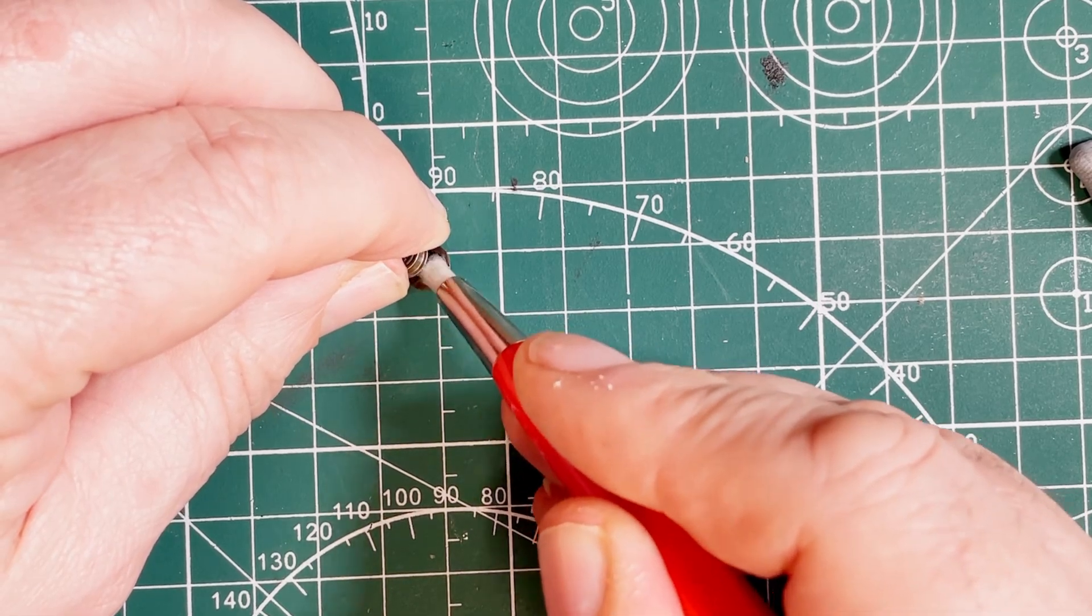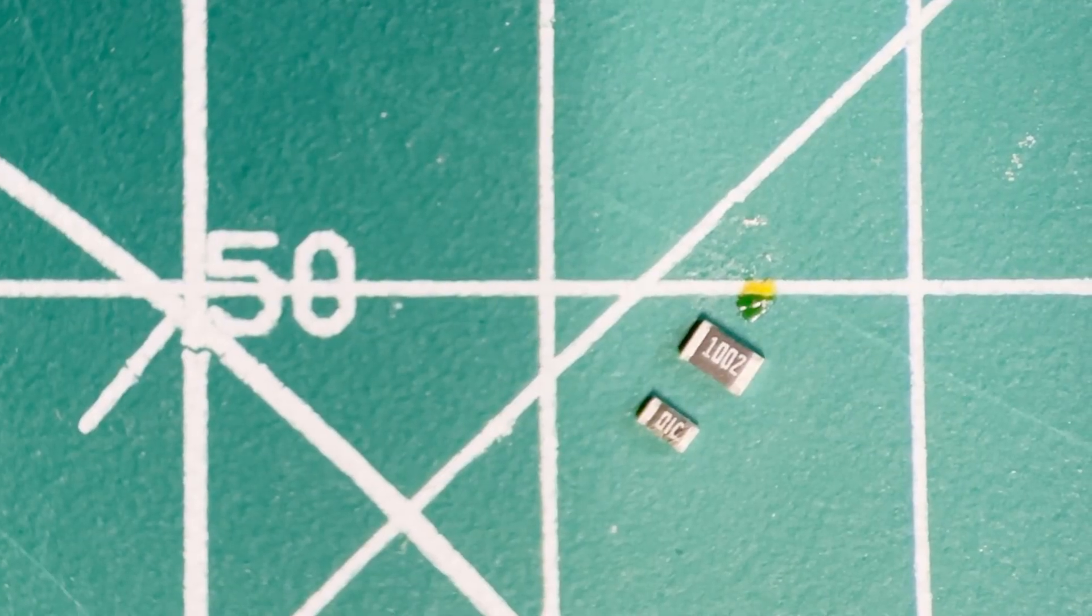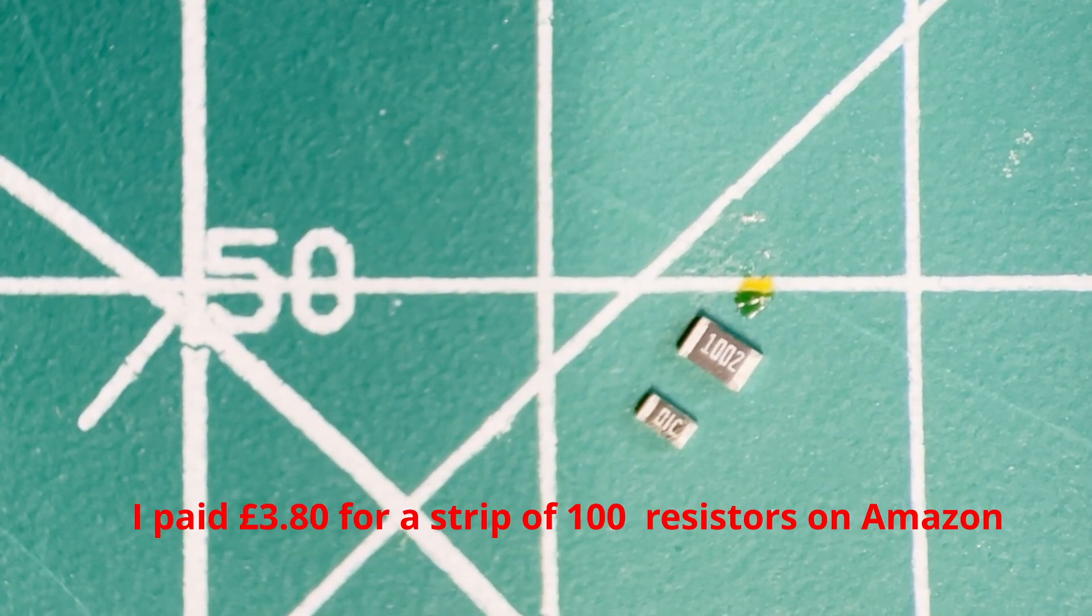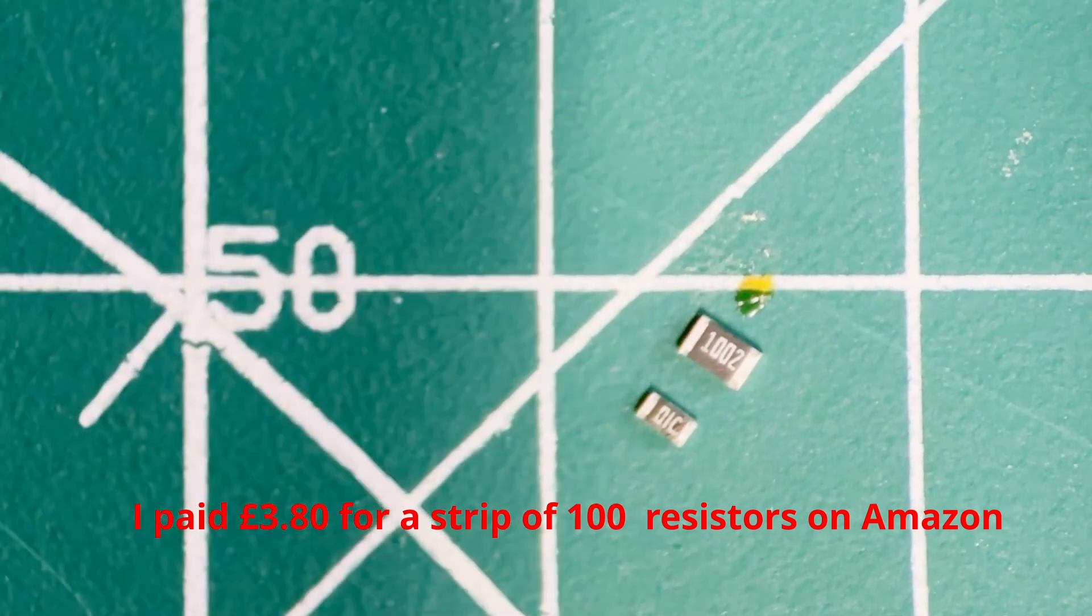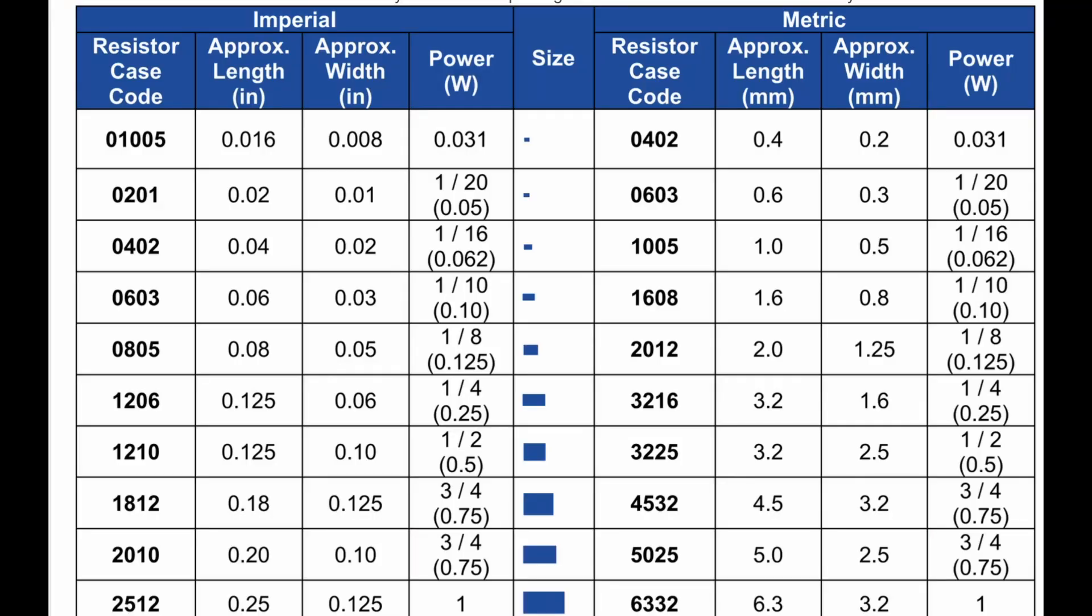Okay, and here are the surface mount resistors. The bigger resistor is a size 805 and the smaller one a size 603. Today we're going to use the smaller 603 for the N gauge wheels, and I'm not going to lie, they are small at 1.6 millimeters by 0.8 millimeters.